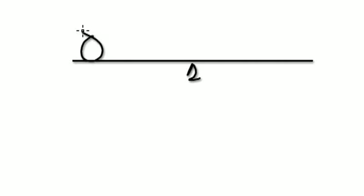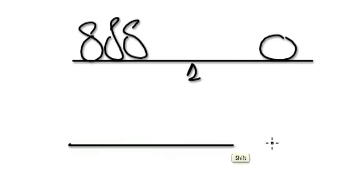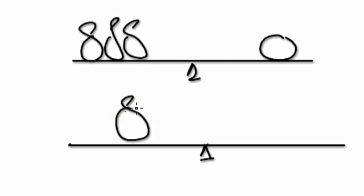So if I were to say three bags equals one suite, then you would divide both sides by three. So you have one bag on this side, and you've got one suite here divided by three. So you've got a third of a suite, by dividing both sides by three.